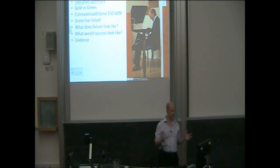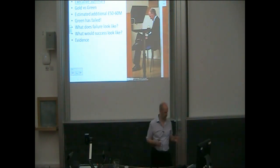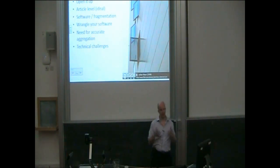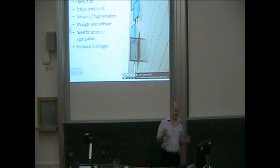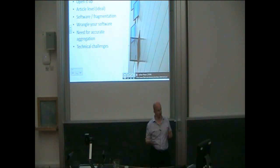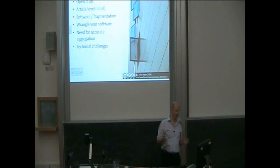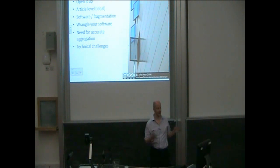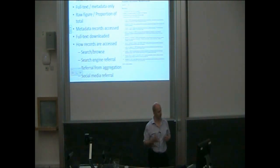Their suggestion would be that Green has failed — but what does failure look like, and how do we get the evidence for that? To put a positive spin on it, we want article-level dynamic data. There are software issues around that — wrangling your software, or buying in help to do it for you. There is fragmentation of applications and software, and what it can do.